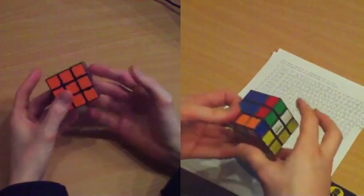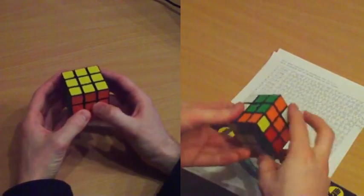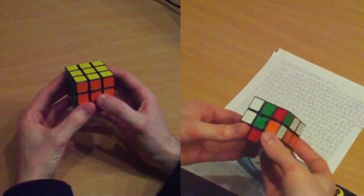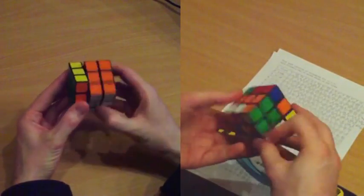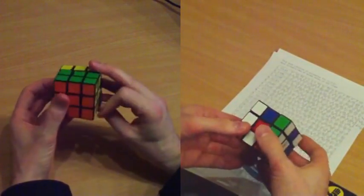In this video, I demonstrate RUF double layer cubing, which means I scramble and solve turning only double layers, and only the right, up, and front.